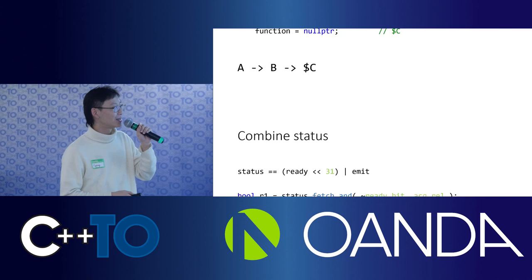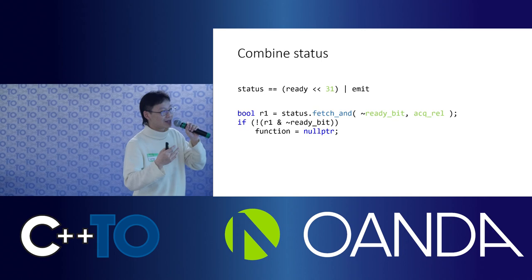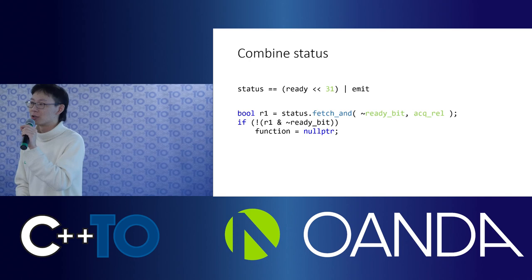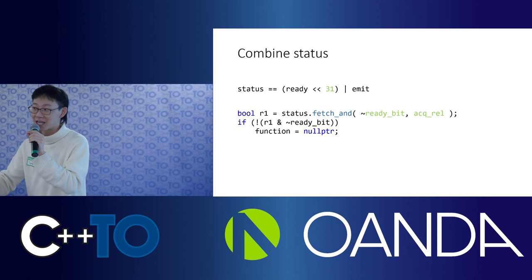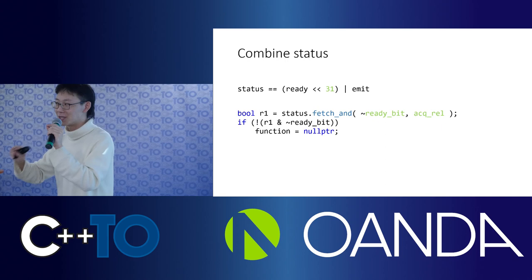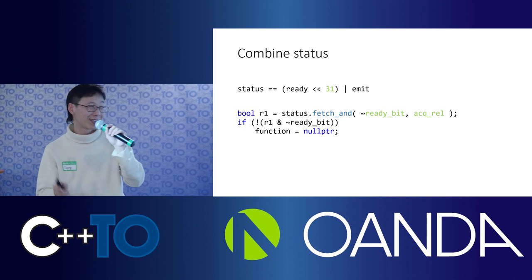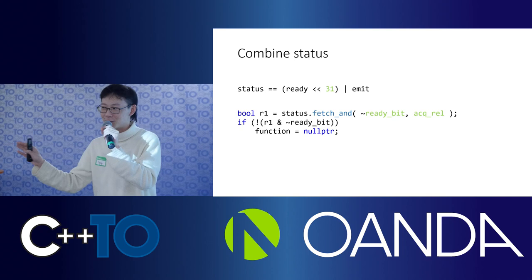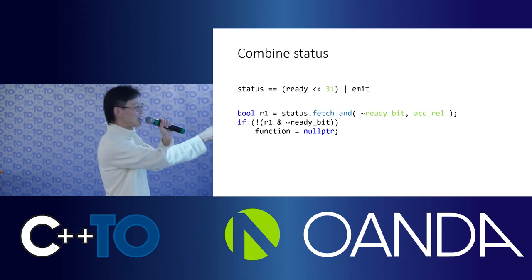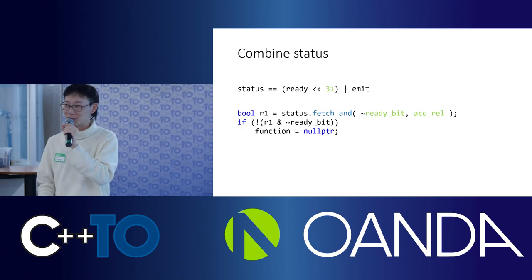Instead, I recommend combining dependent state into one atomic variable. The key insight is that atomic variables are just bits — they are not typed at all. If you have an integer, it's just 32 bits, nothing more, nothing less. Do not write atomic of some struct. Just wrap it around some bits and use bitwise operations heavily for atomics, because that's what you're really getting.